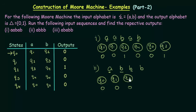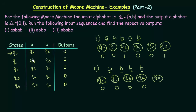The next input is B and we are in Q3. Q3 on getting B goes to Q4, and Q4 produces the output 0. Then the next input is B and we are in Q4. In Q4 if we get B, it goes to Q0, and Q0 produces the output 0. So the output we get for input A, B, B, B is 0, 0, 0, 0, 0, 0.